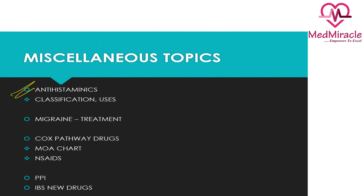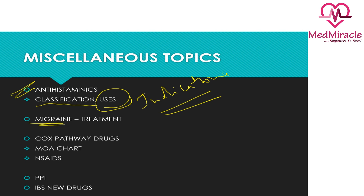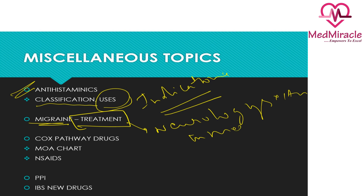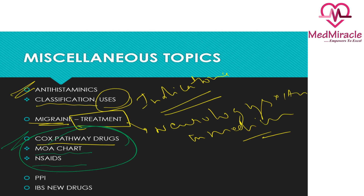Coming to miscellaneous topics: first, antihistamines — know the major classifications and various indications. Migraine is an important topic; know the drugs used in treatment, and it is also covered in the neurology section of medicine. The COX pathway drugs are also a hot topic — be thorough with the mechanism of action of NSAIDs. There is also a pathway image coming up in the slides, so be thorough with that image too.